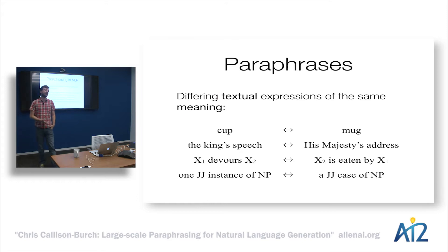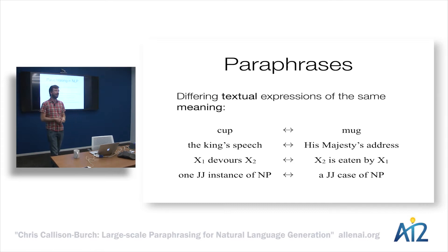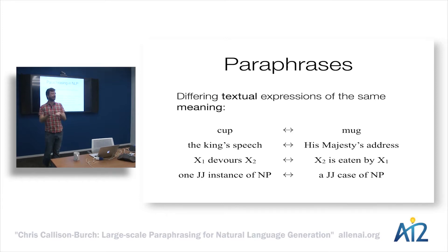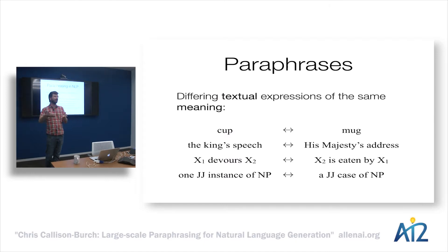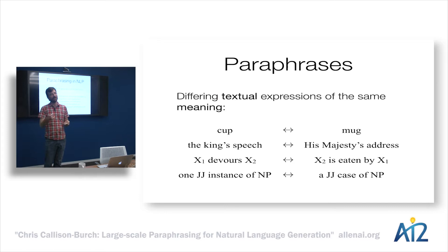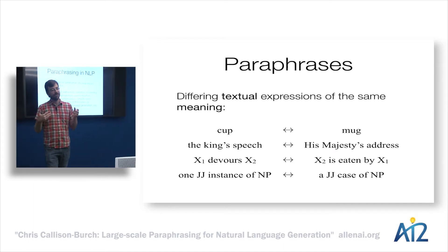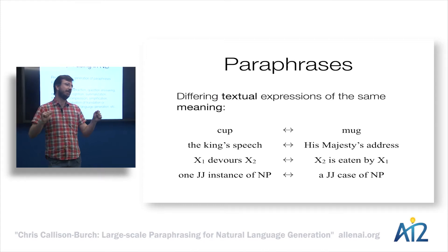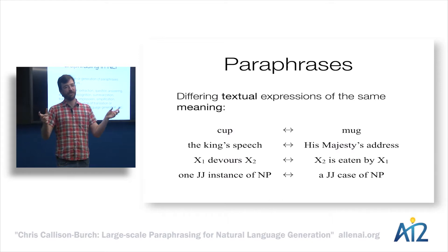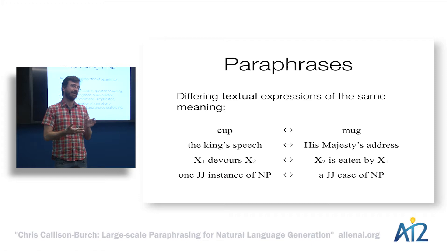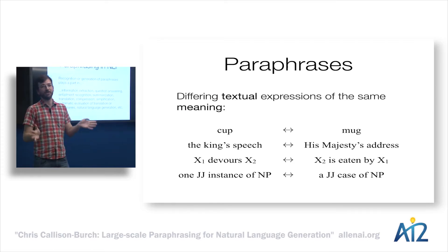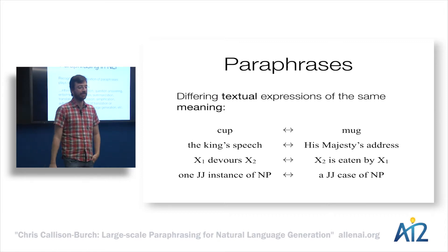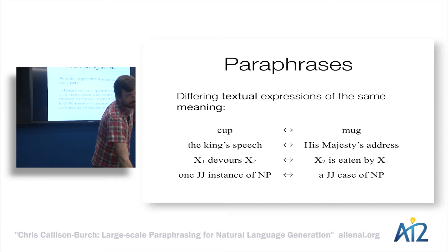Paraphrases are potentially useful for a wide range of natural language processing applications. In question answering, if we wanted to build a QA system off of Wikipedia and someone asks 'when did California become a state,' the actual Wikipedia text says 'California joined the Union' — knowing that 'become a state' and 'join the Union' are paraphrases of each other is necessary for answering that. In multi-document summarization, paraphrasing is useful in two ways: first to identify repeated elements across documents to pick out the most salient things, and second to avoid accidentally repeating elements that mean the same thing and artificially lengthening the summary.